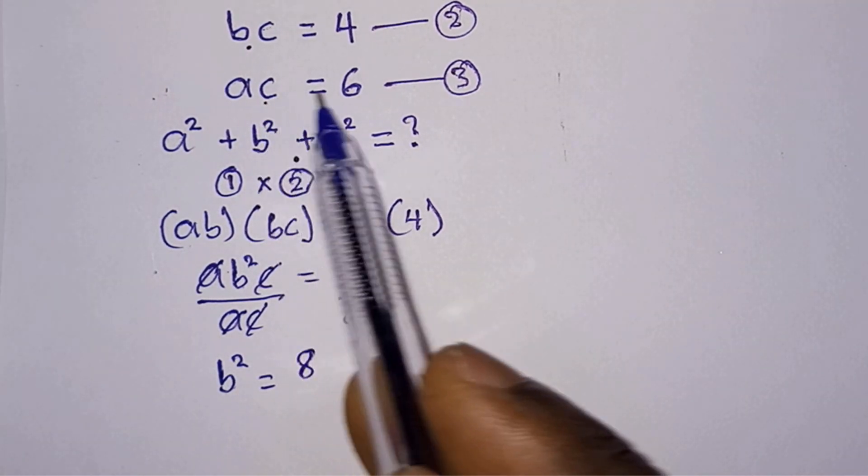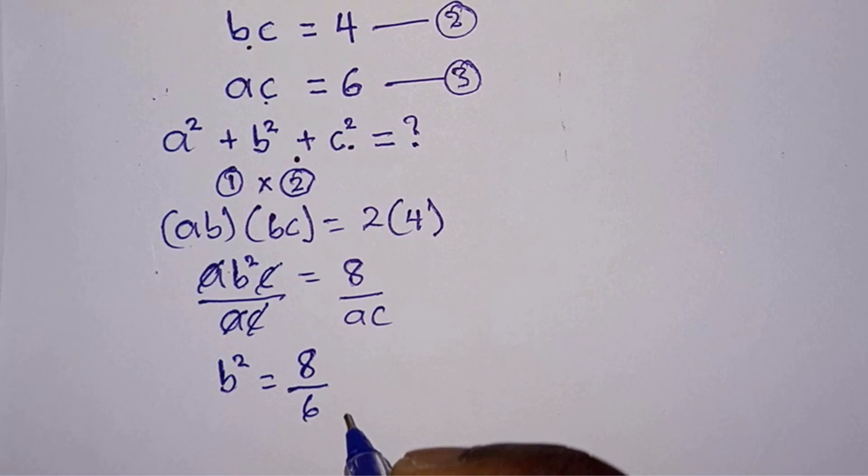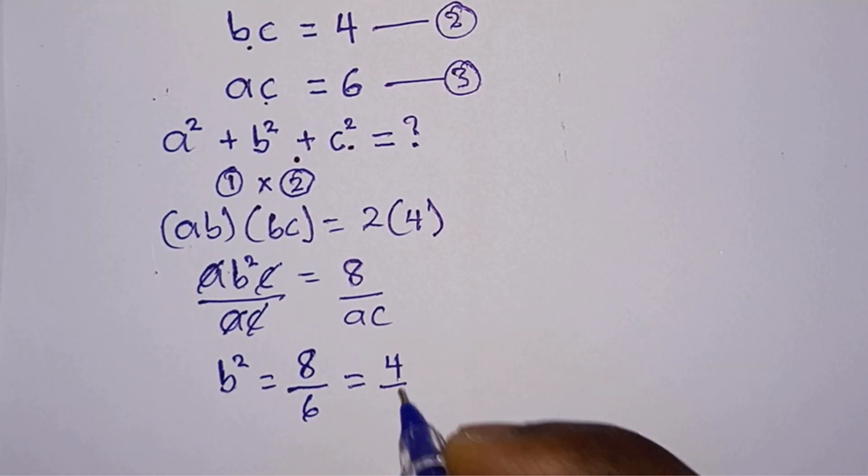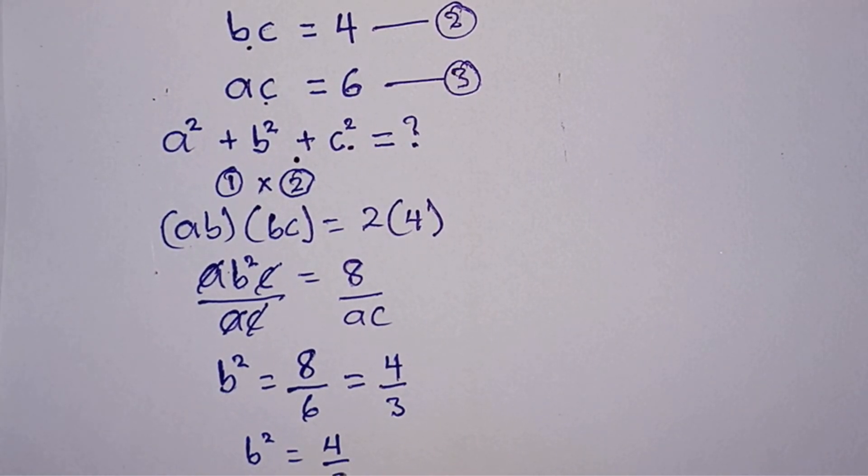From equation 3 we know that ac = 6, so we'll have 8 divided by 6, and we can simplify this as 4/3. Therefore b² = 4/3.